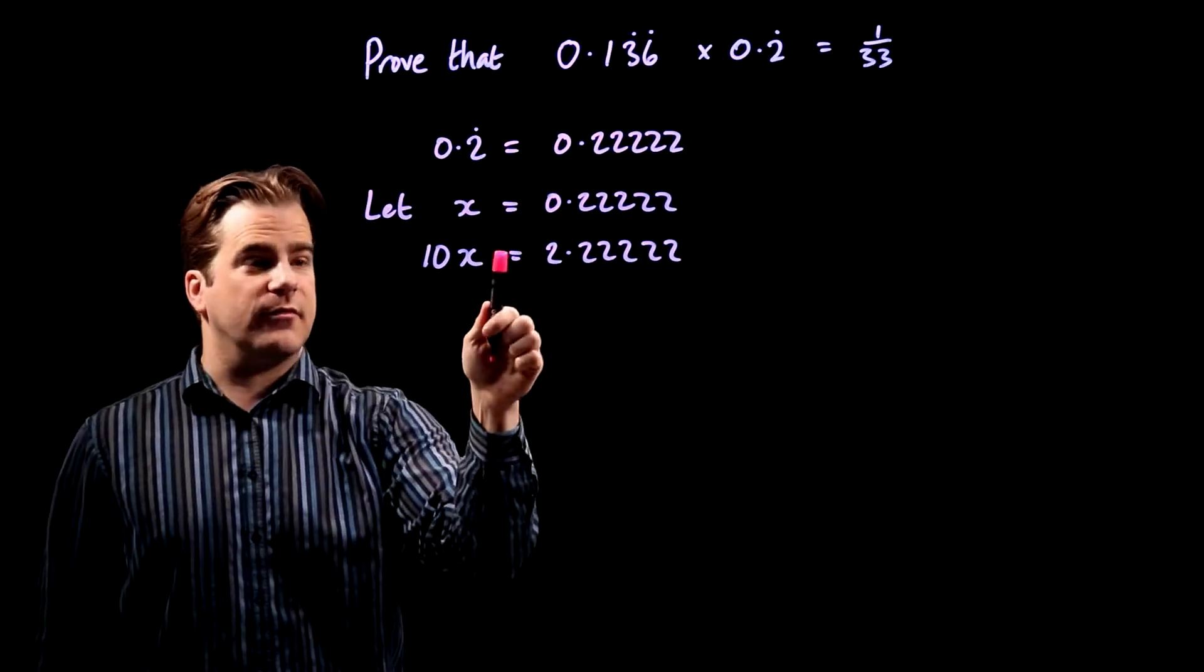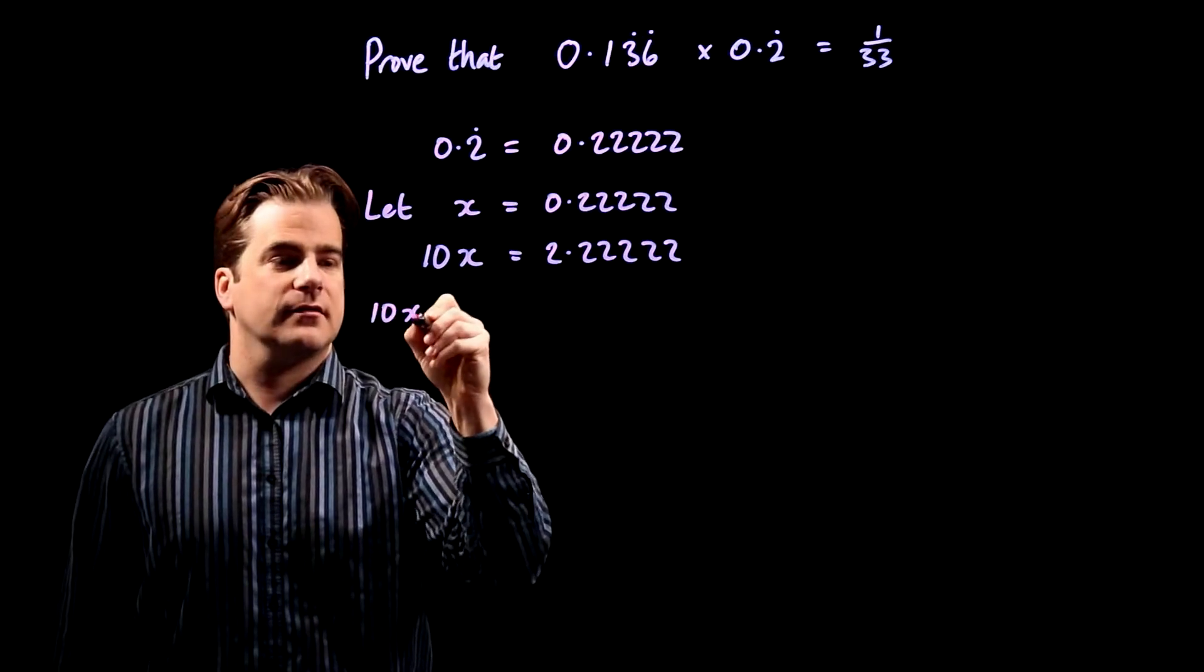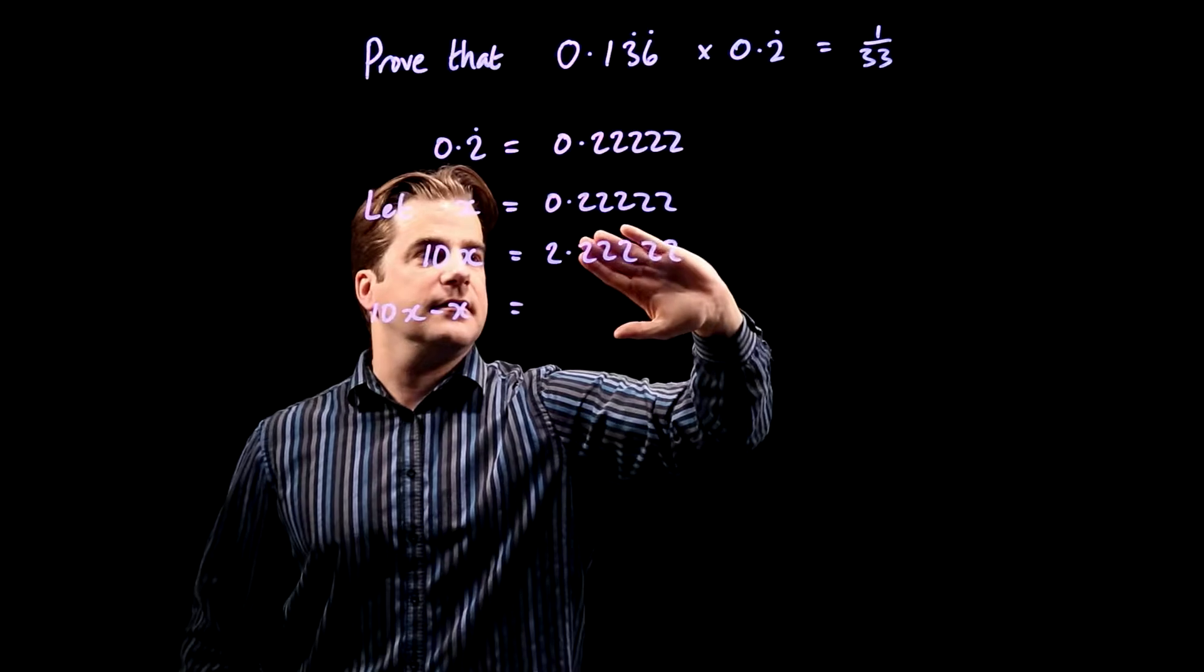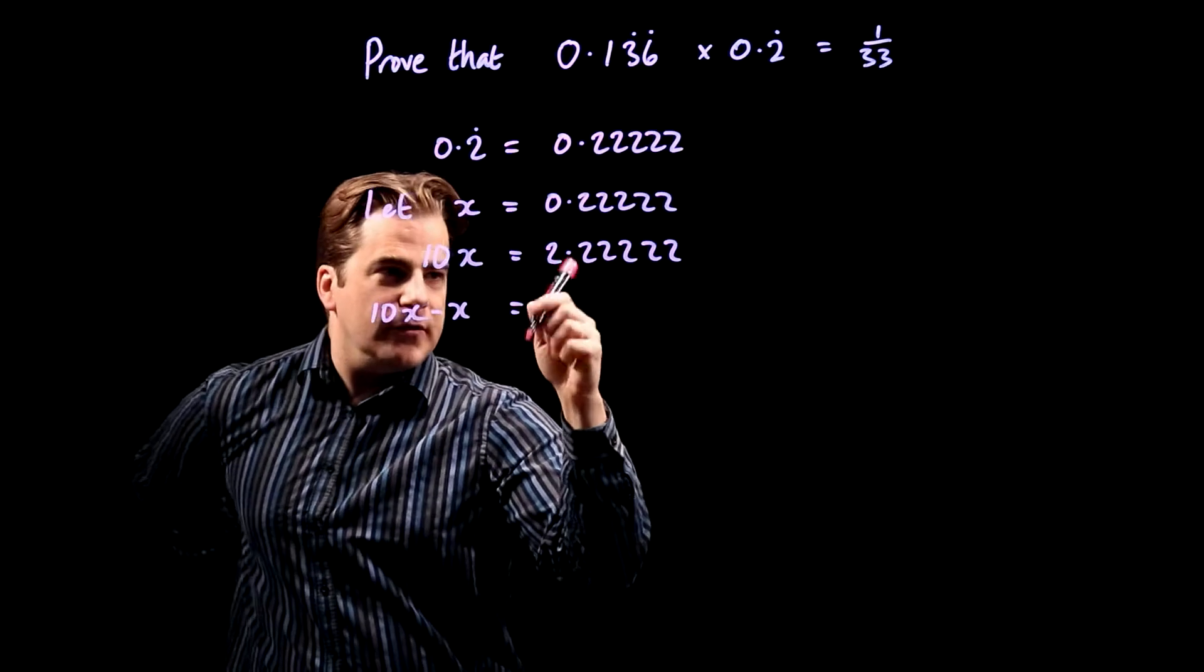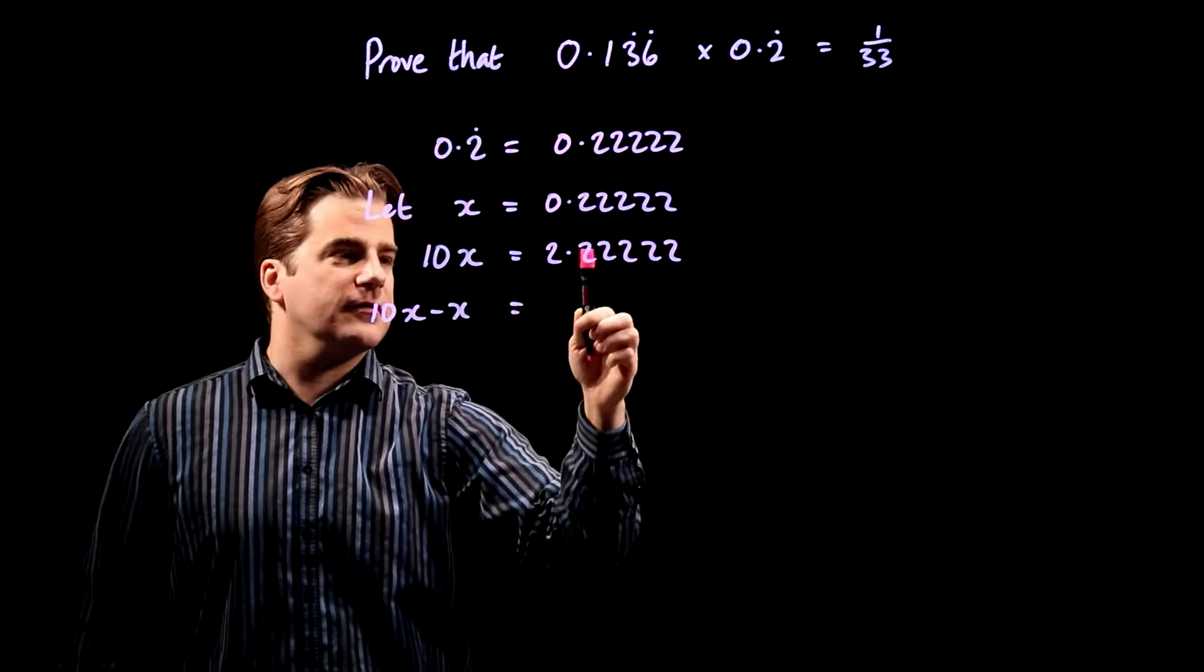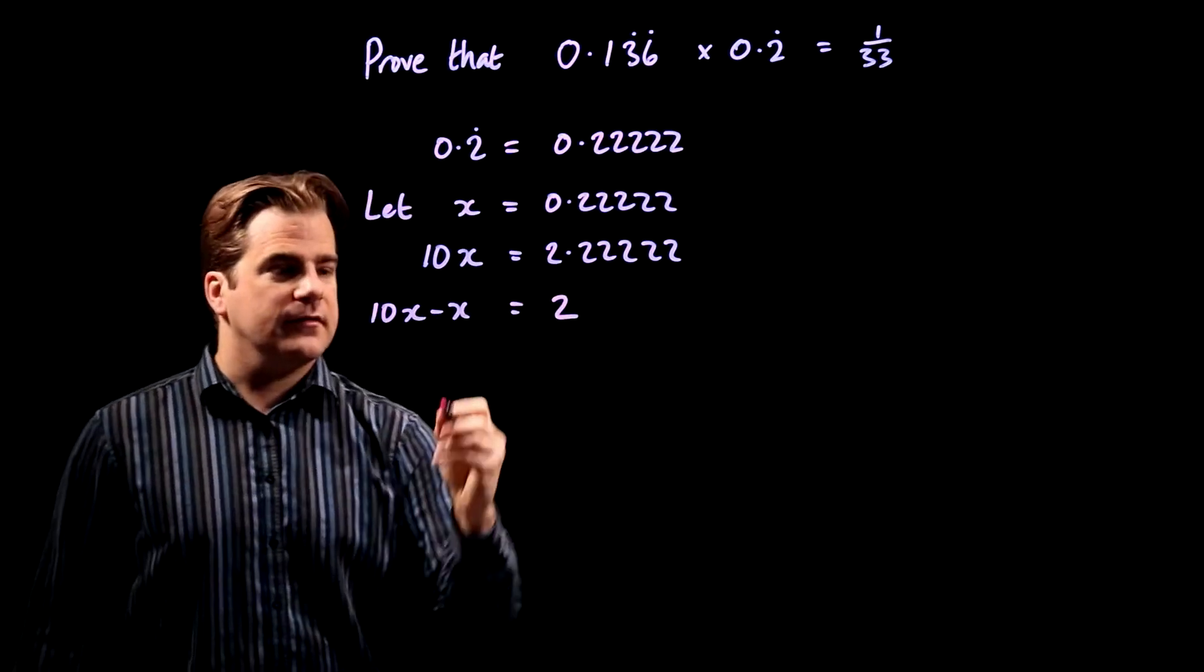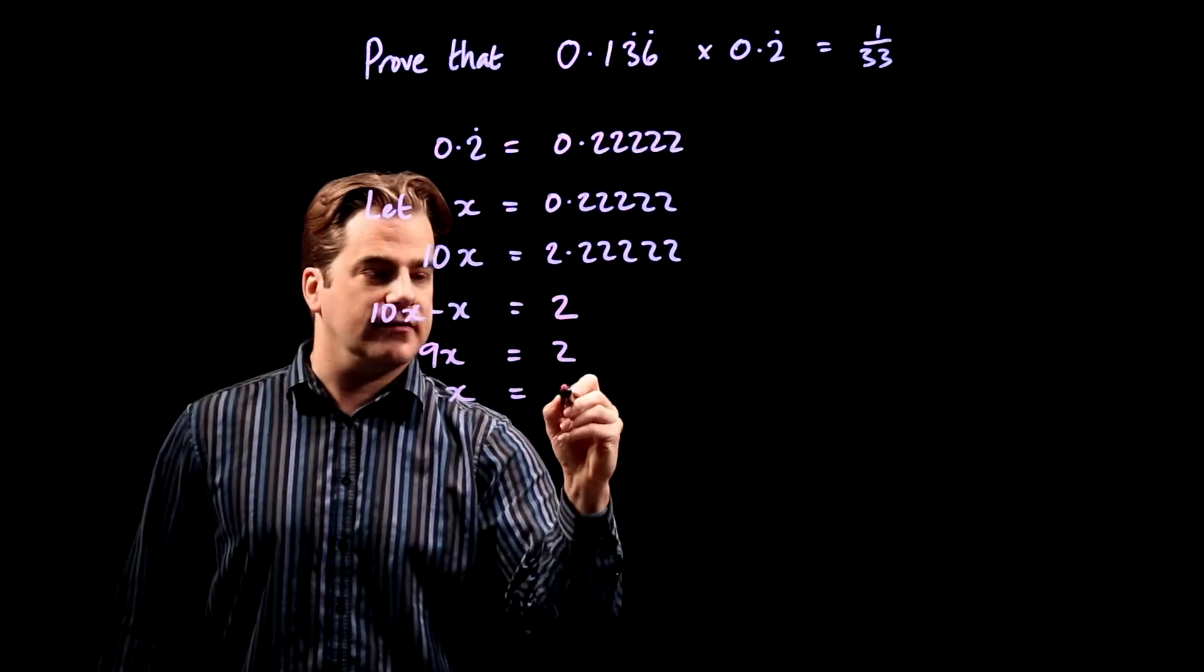And then you just subtract that from that. So we're going to do 10x minus x equals that minus that. Well, all of that, take away that, they cancel if you like. You've got 2 plus 0.22222222. So when you subtract 0.22222222, you just have 2. So we get 9x equals 2. So x is 2/9.